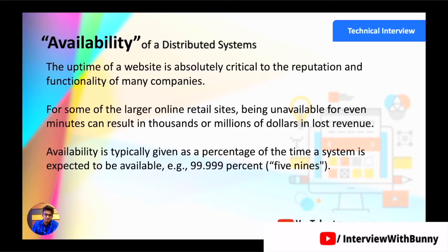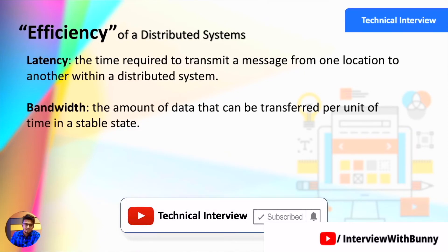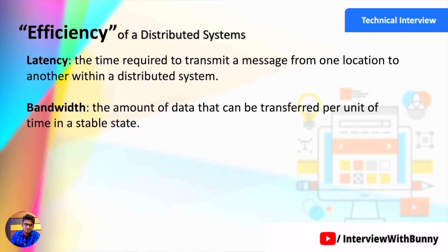High availability in a distributed system is achieved through careful replication of key components or services, so that if one service goes down, another server or service working in standby mode can come into action. According to Wikipedia, an ideal system should be available for 99.999% of the time, which is called the 'five nines' of system design. The next key factor is efficiency, which is measured by two parameters: latency and bandwidth.